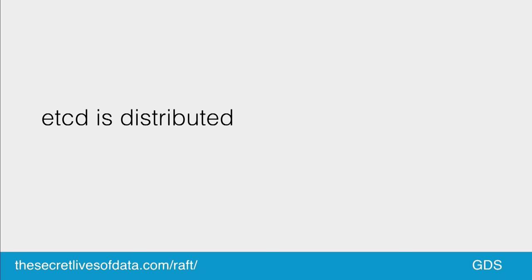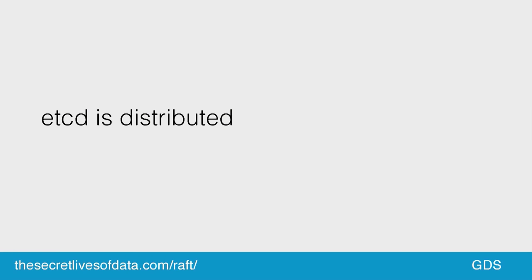etcd is a distributed key-value store, as mentioned, and it uses Raft as the consensus algorithm. In an etcd cluster you have a leader machine and followers — the leader is the machine that determines the state. etcd uses the Raft consensus algorithm to determine who is the leader. Raft is an improvement on — or rather an attempt to simplify — the Paxos algorithm, to make consensus algorithms more easy to reason about. There's a really good visualization at the URL at the bottom of the slides, which I highly recommend if you're interested.